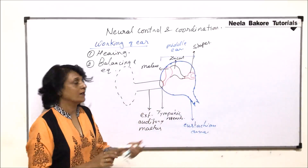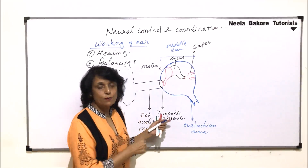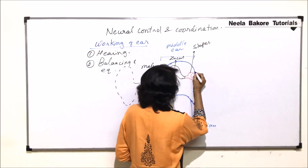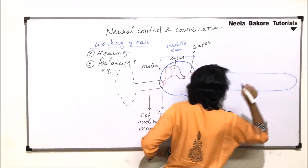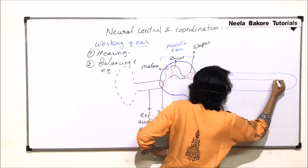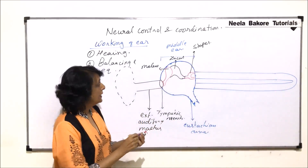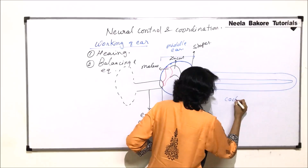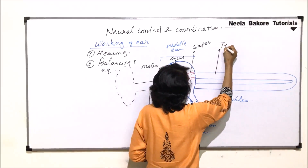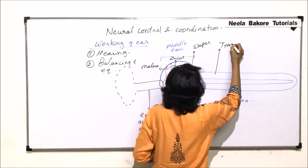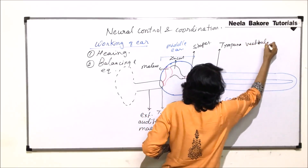The stapes is connected to the oval window of the cochlea. To understand the working, we are drawing the cochlea as a straight tube instead of a coiled structure. The upper compartment is the scala vestibuli, and the middle compartment is the scala media.